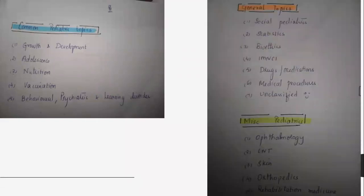Let me give you an example of how the list might look. These are common pediatric topics — core pediatrics basically: nutrition, vaccination, behavioral pediatrics, learning disorders. Then you have general topics like social pediatrics, drugs, medications, procedures. And miscellaneous — very small pediatric topics like ENT and ophthalmology.